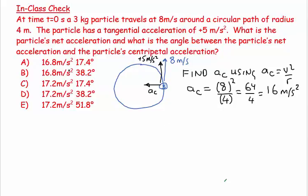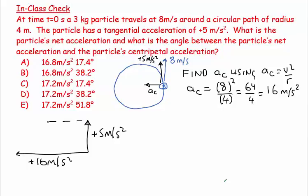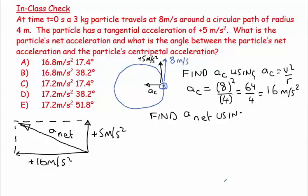It asks for the net acceleration and the angle between the net acceleration and the centripetal acceleration. Let's draw this a little better to scale. The acceleration in the tangential direction is plus 5 meters per second squared, and the acceleration in the centripetal direction is plus 16 meters per second squared. The net acceleration is the resultant of these two components.